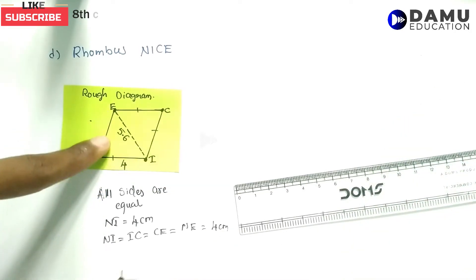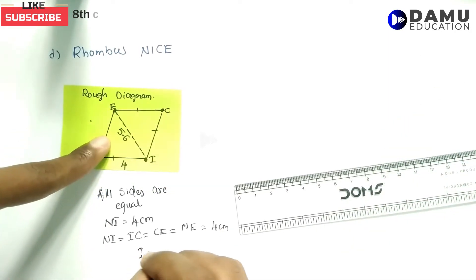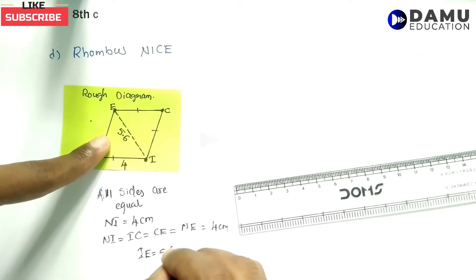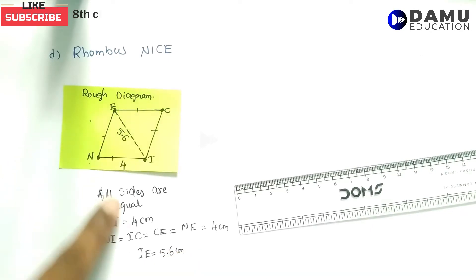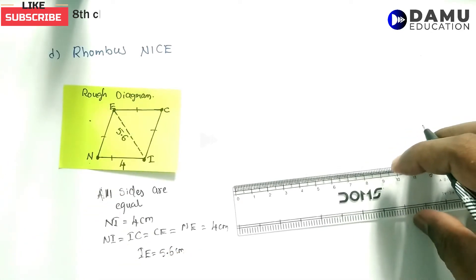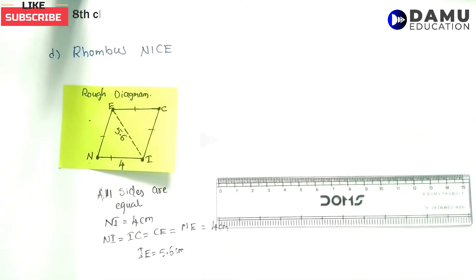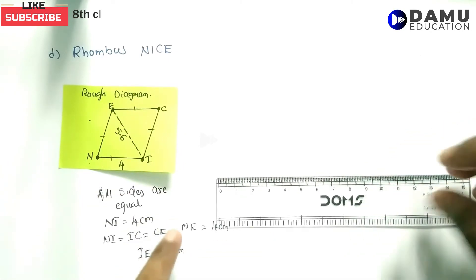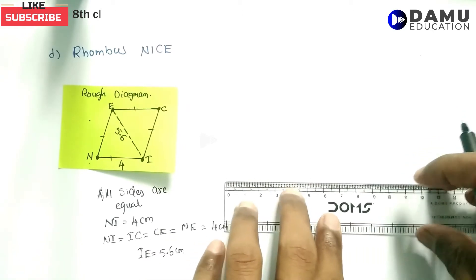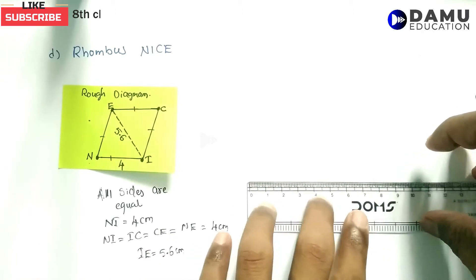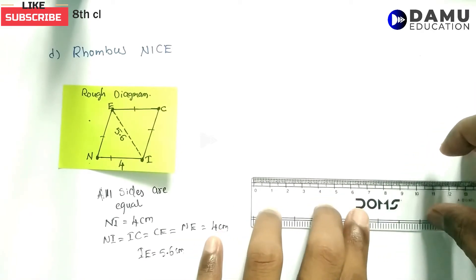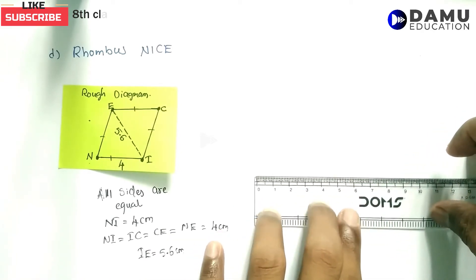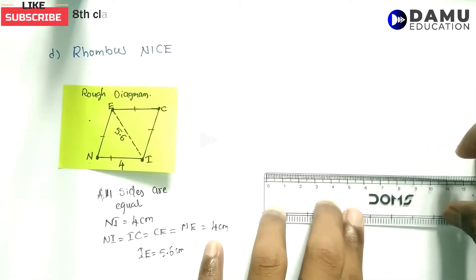Then, what they have given is diagonal IE, which is given as 5.6 centimetres. So 5.6 centimetres is given. First we need to construct the base, that is NI as 4 centimetres.